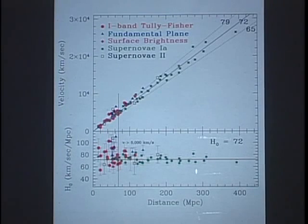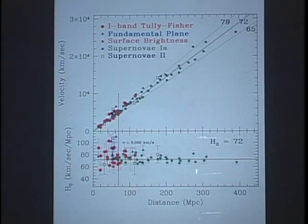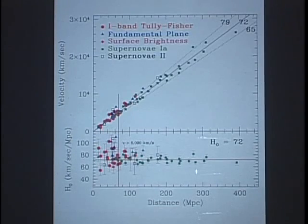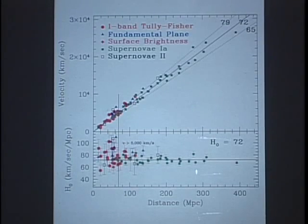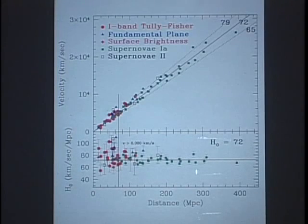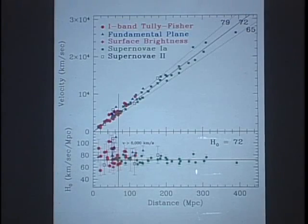Nevertheless, based on that very local data, Hubble came with his linear relationship — a monumental statement in the history of mankind, because it puts the universe at a very different level than what people thought before. The universe is expanding.